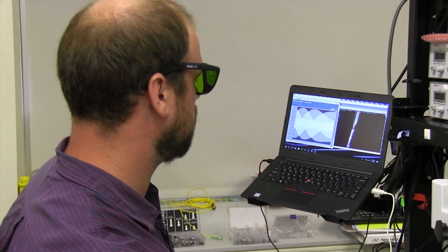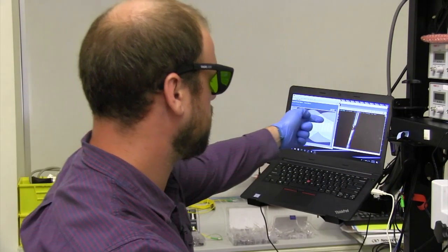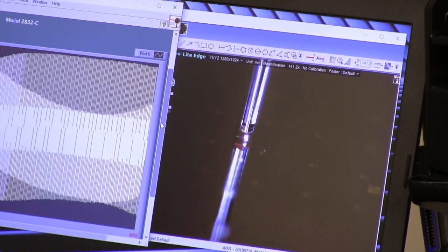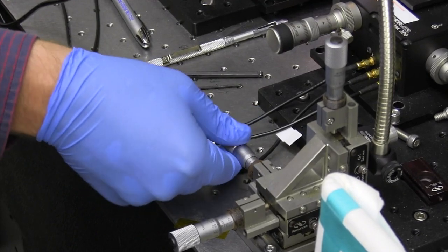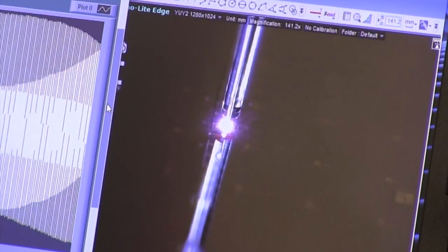So the first thing that I'm looking for is I can see sort of a bright spot as I go over the device and then it goes away. And so I'm trying to get it right in the middle of that.